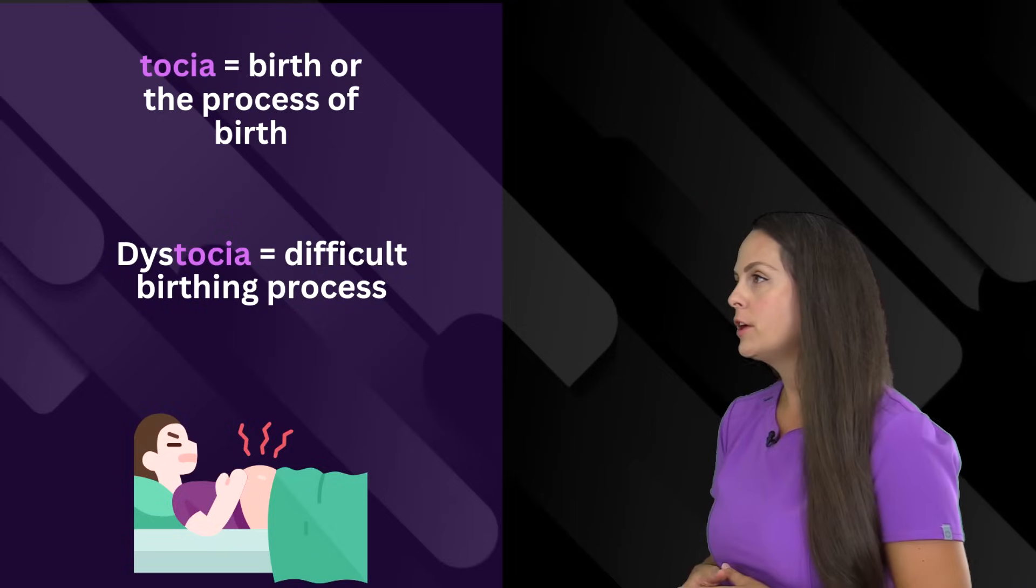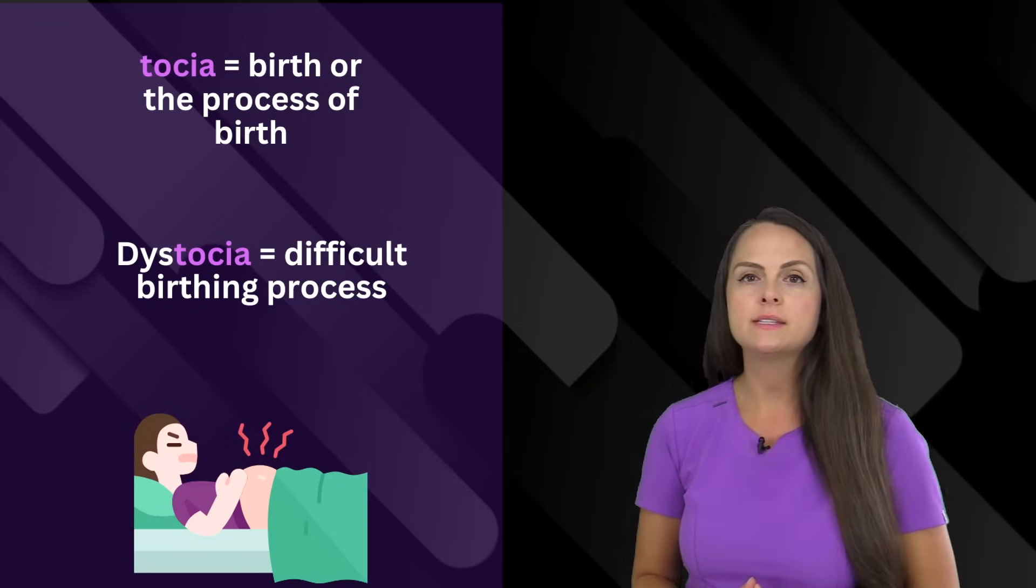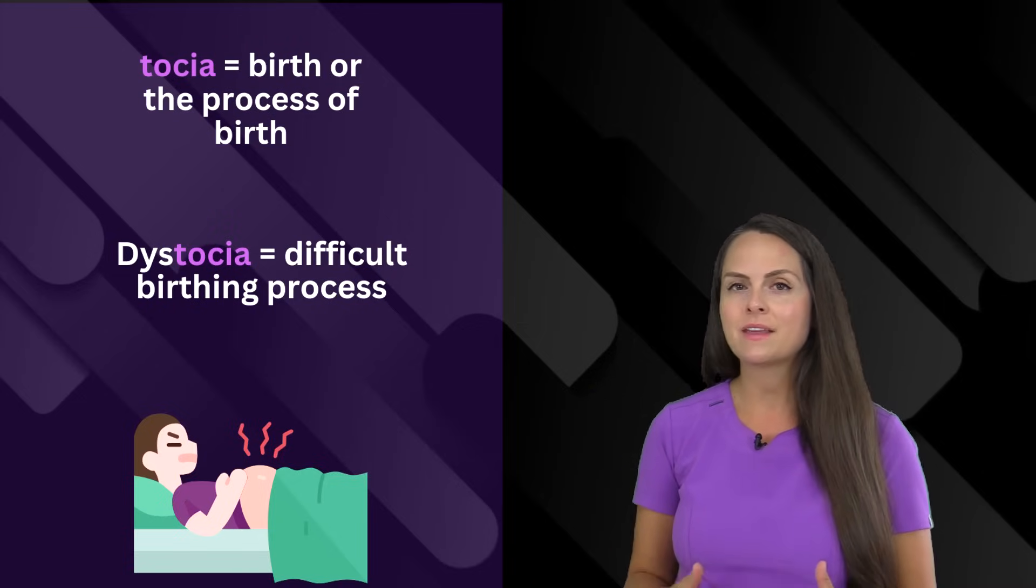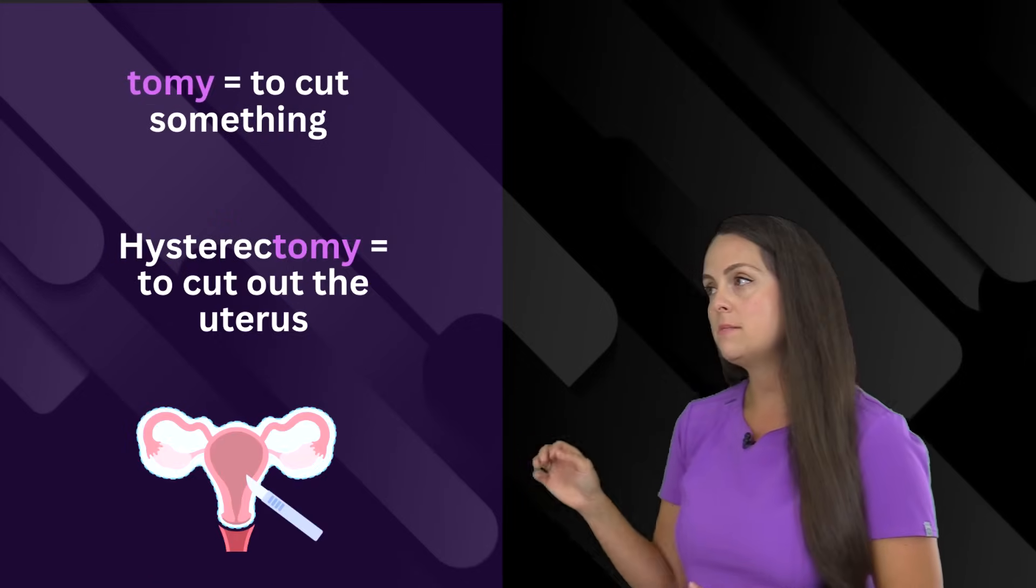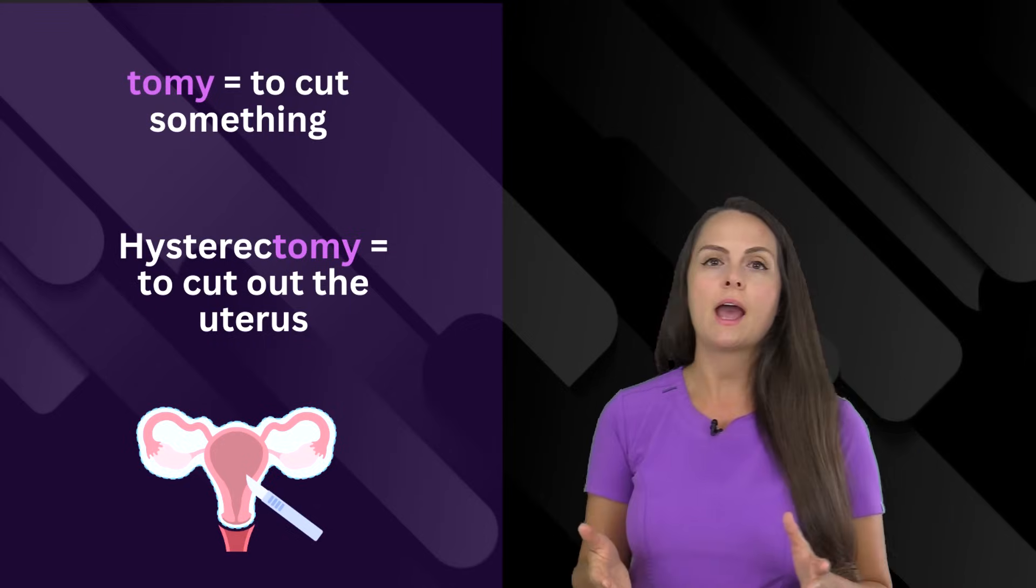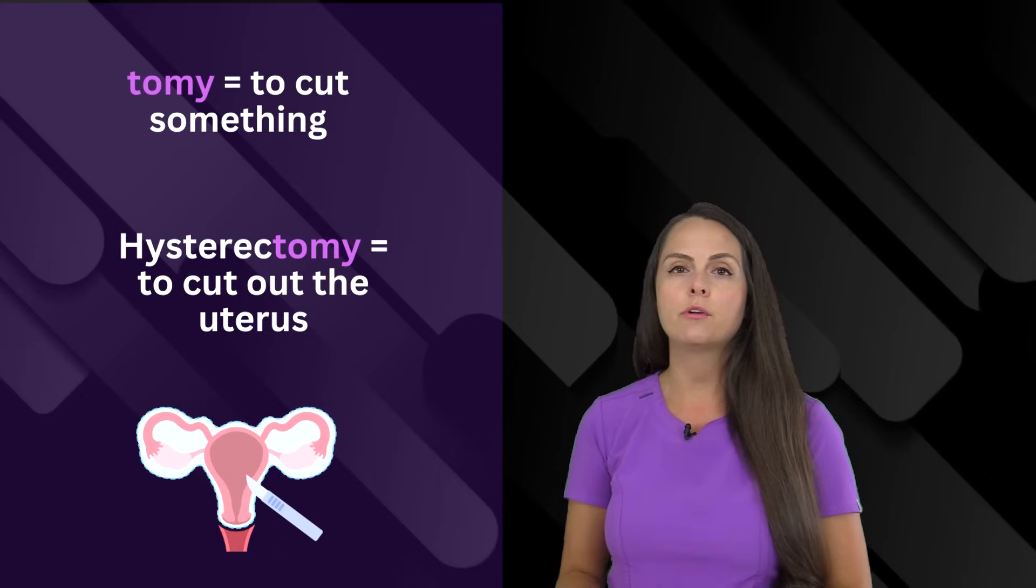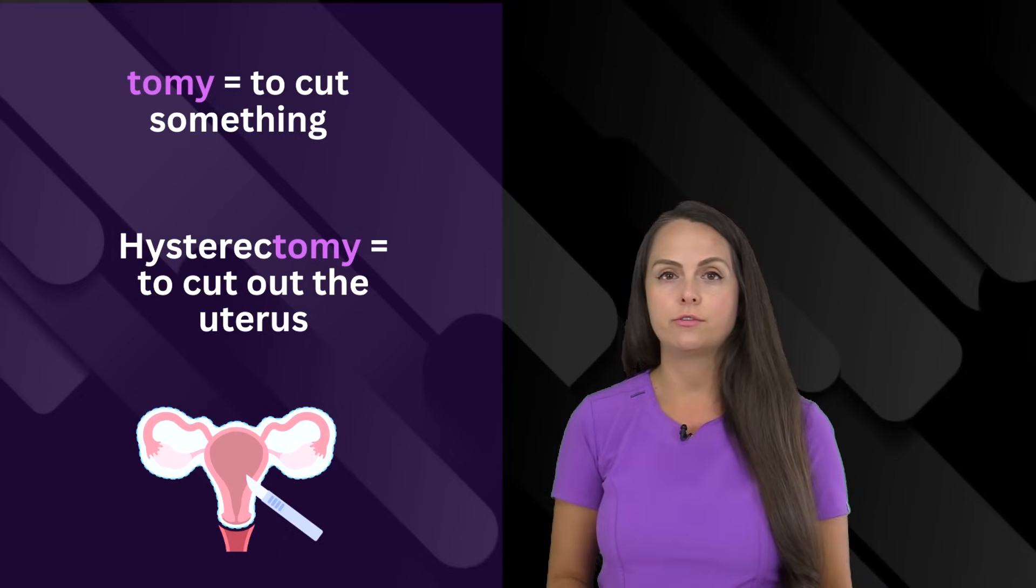The suffix tocia refers to birth or the birthing process. If someone is having dystocia, that means that they are having a difficult birthing process. Then we have tomy, which means to cut. If a person has a hysterectomy performed, that means we have cut, hence removed, taken out the uterus.